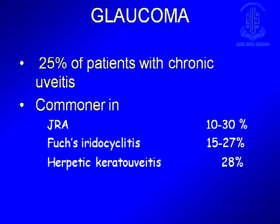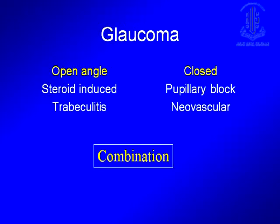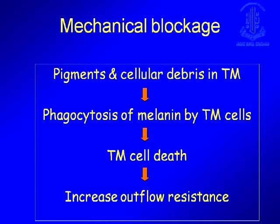Glaucoma is quite common among patients with uveitis, as has been mentioned by speakers earlier today. It can range from open angle — classically with steroid-induced, or with trabeculitis, or with pupillary block, or neovascular glaucoma. The mechanical blockage that occurs in the angle because of trabeculitis or inflammation is very often the cause, especially in early acute inflammation.